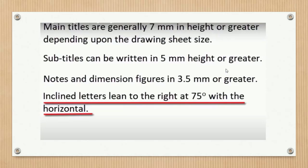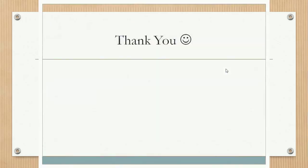Specifically, when writing inclined letters, the angle of the inclined letter is 75 degrees — inclined letters lean to the right at 75 degrees with the horizontal. That's all about the lettering. See you soon in the next lecture. Thank you.